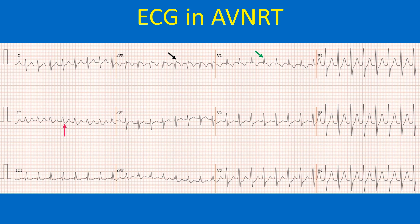In the slow-fast variety, an atrial ectopic beat is conducted down the slow pathway as it finds the fast pathway refractory after the previous sinus beat. It may be noted that the slow pathway recovers fast while the fast pathway recovers next. This feature is seen in those with dual AV nodal physiology.